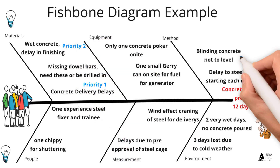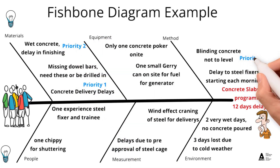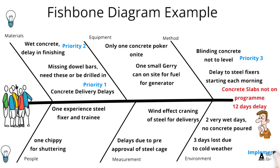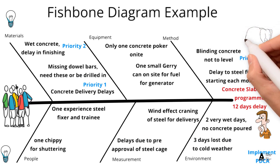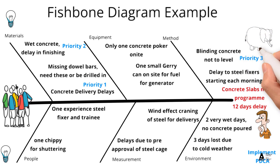It's important that we try to prioritize them, so we rank them one, two, and three. To prioritize, we get agreement from our team on which are the most important ideas, and then we implement a Plan-Do-Check-Act cycle. It's always very important when doing a fishbone diagram that if there's an elephant in the room, it needs to be talked about.